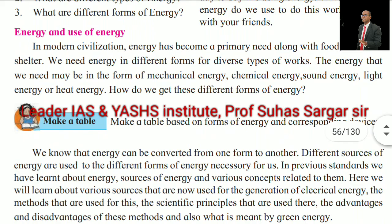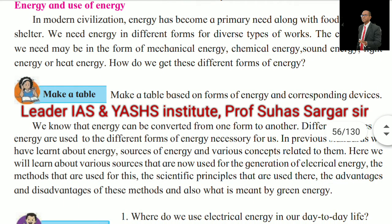Energy and use of energy. In modern civilization, energy has become a primary need along with food, cloth and shelter. We need energy in different forms for diverse types of work. The energy that we need may be in the form of mechanical energy, chemical energy, sound energy, light energy or heat energy. How do we get these different forms of energy? Make a table based on forms of energy and corresponding devices. We know that energy can be converted from one form to another.